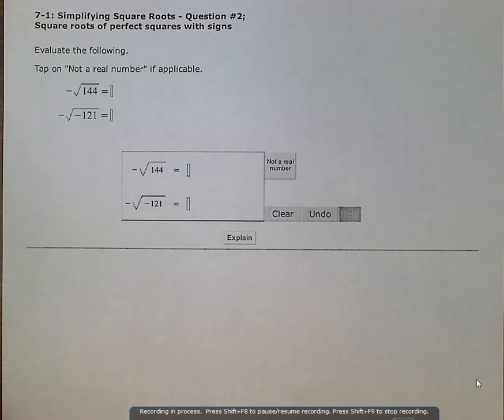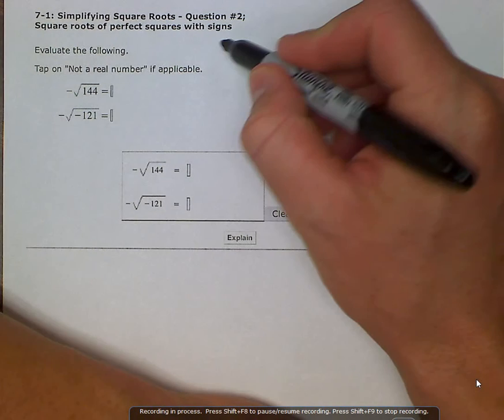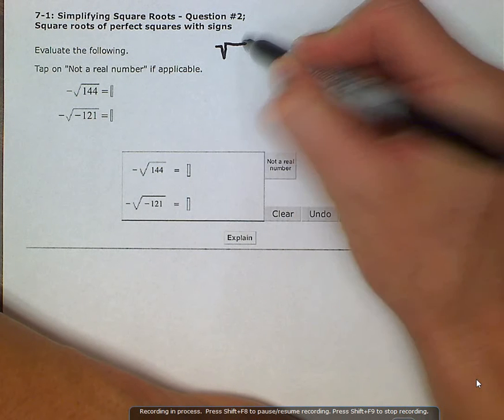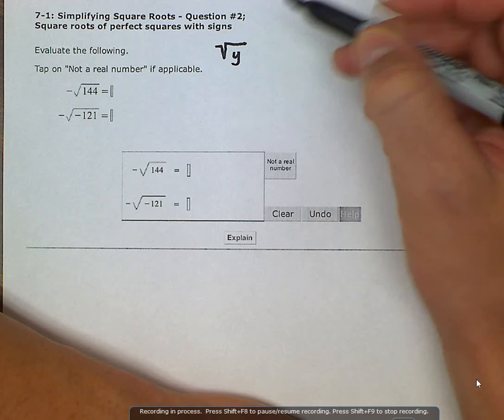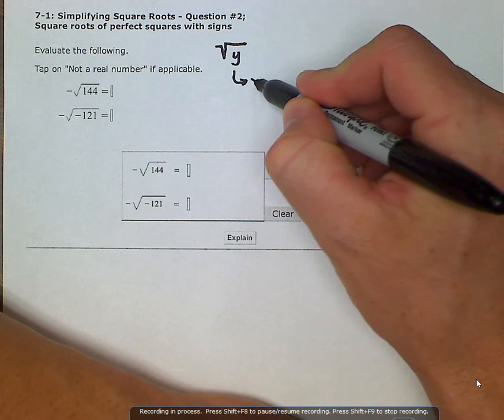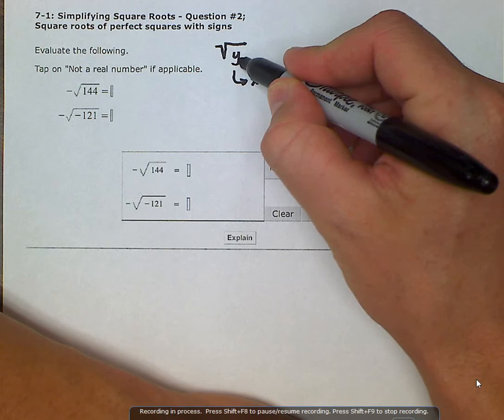So the things that we need to remember: one is our perfect squares and we need to understand what a square root is asking. A square root of some number y is asking to find some number when multiplied by itself that is equal to this y or the number under the radical here.